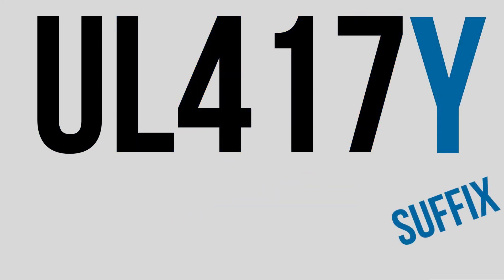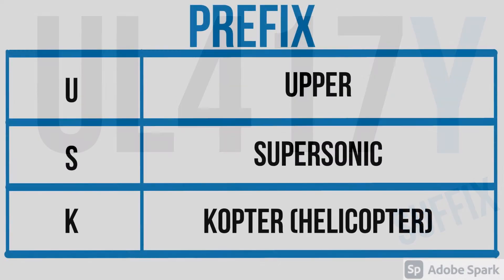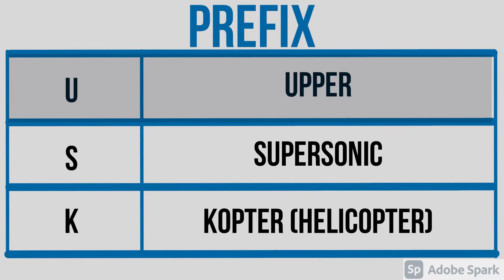For the prefixes, three letters can be used: U, S, and K — or United, Sierra, and Kilo. Letter U, or United, stands for upper, which means that that airway goes in the upper flight levels. In some countries that goes from 19,500 feet, in others from 24,500 feet, so it depends.